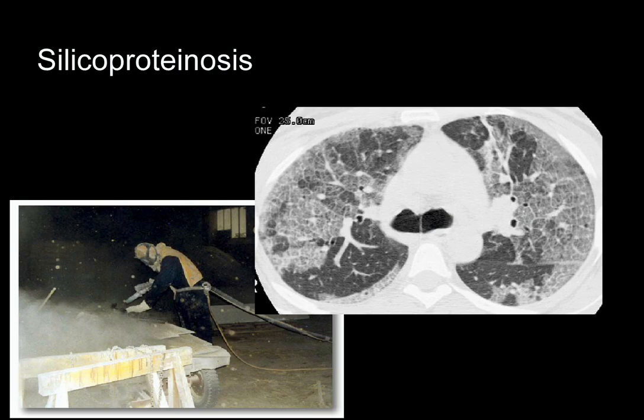Silicoproteinosis is an acute manifestation of overwhelming silica exposure, usually developing in weeks to months from exposure to high dust concentrations, particularly sandblasting in an enclosed space. Radiographic findings are typical of alveolar proteinosis: central bat-wing consolidation, and at HRCT, a geographic pattern of ground-glass opacities and intralobular reticular lines — the crazy paving pattern. In contrast to pulmonary alveolar proteinosis, prognosis is poor with limited response to whole lung lavage.